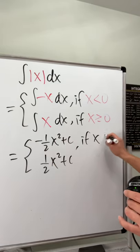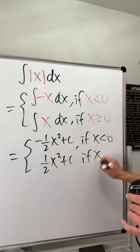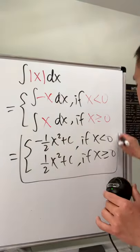And now we just have to say this is if x is less than 0 and if x is greater than or equal to 0. Can x be 0? Yes, in this case, right?